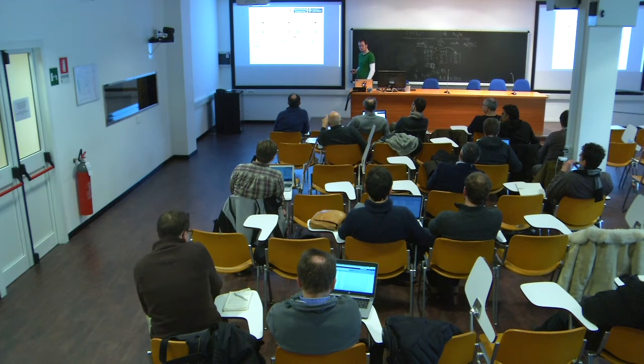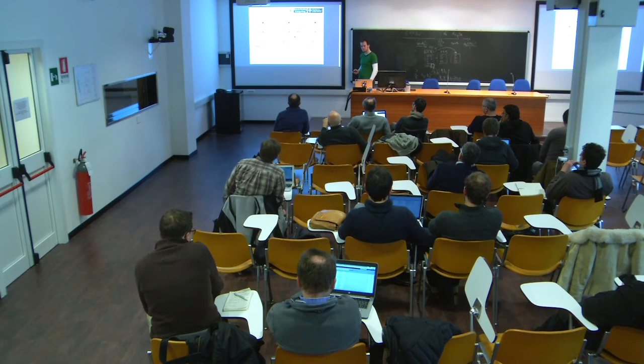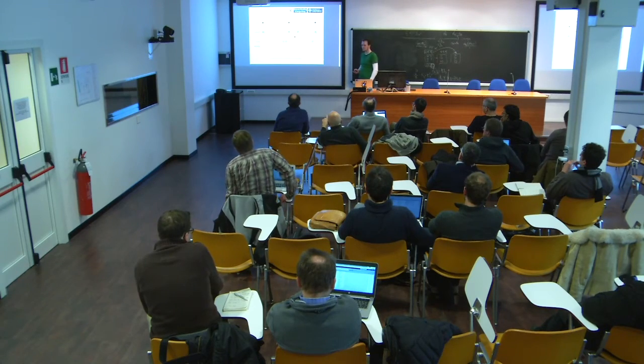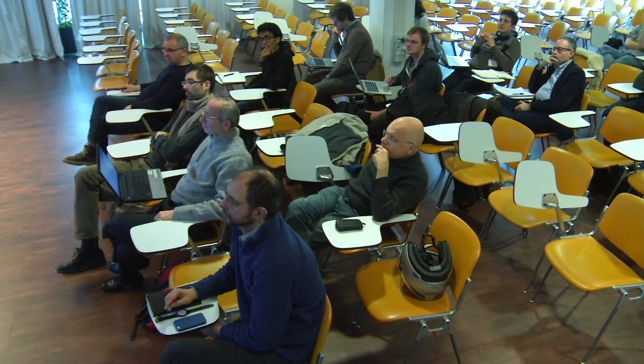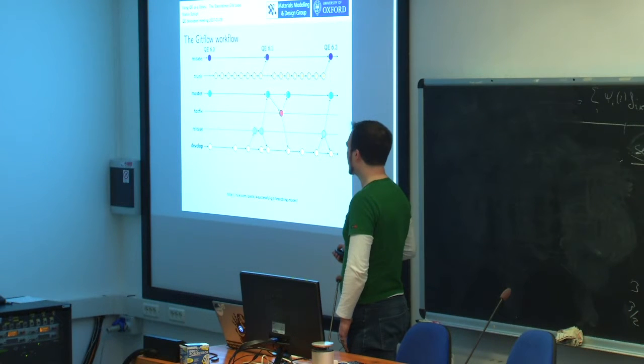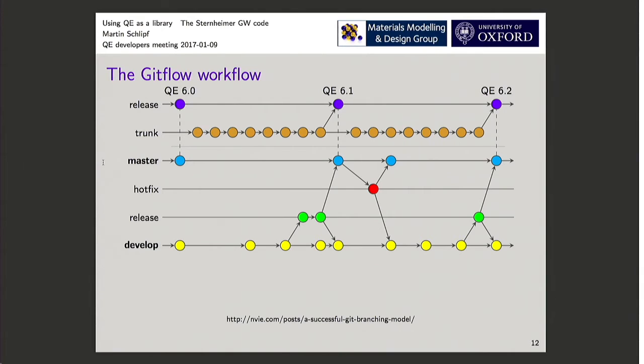The role of the master is that you have one commit. Essentially when someone else uses my code, he can use this version. So this is the stable version, supposedly bug-free. And so this is the stable version.